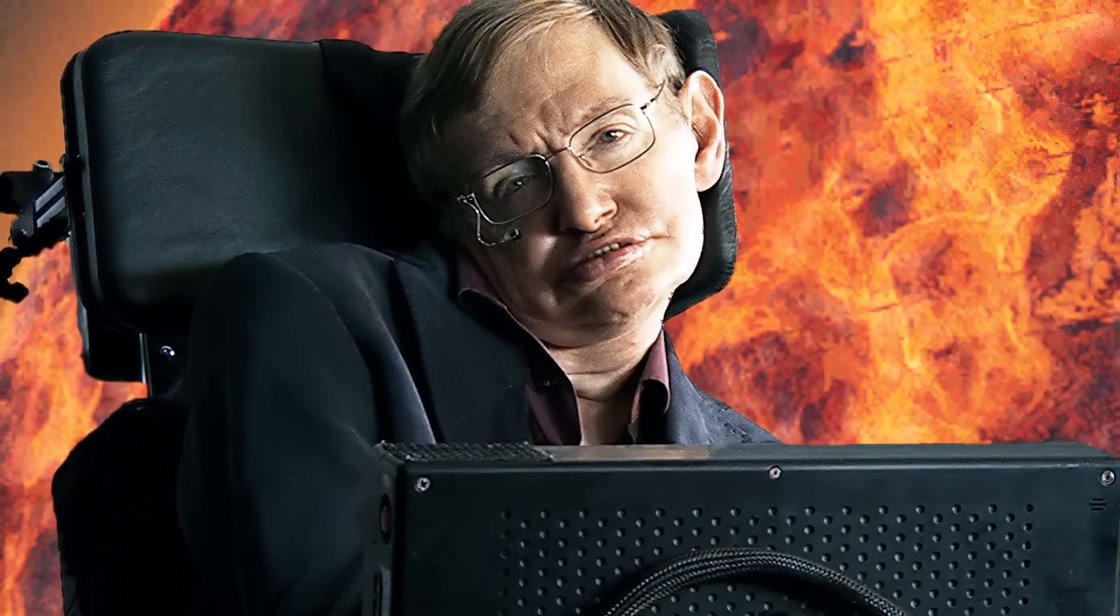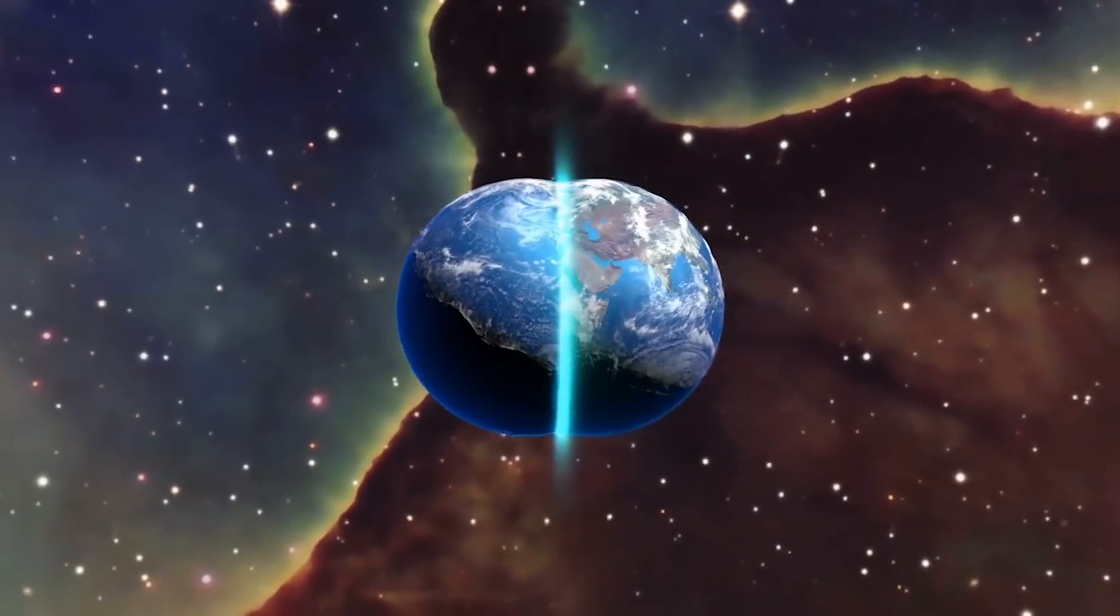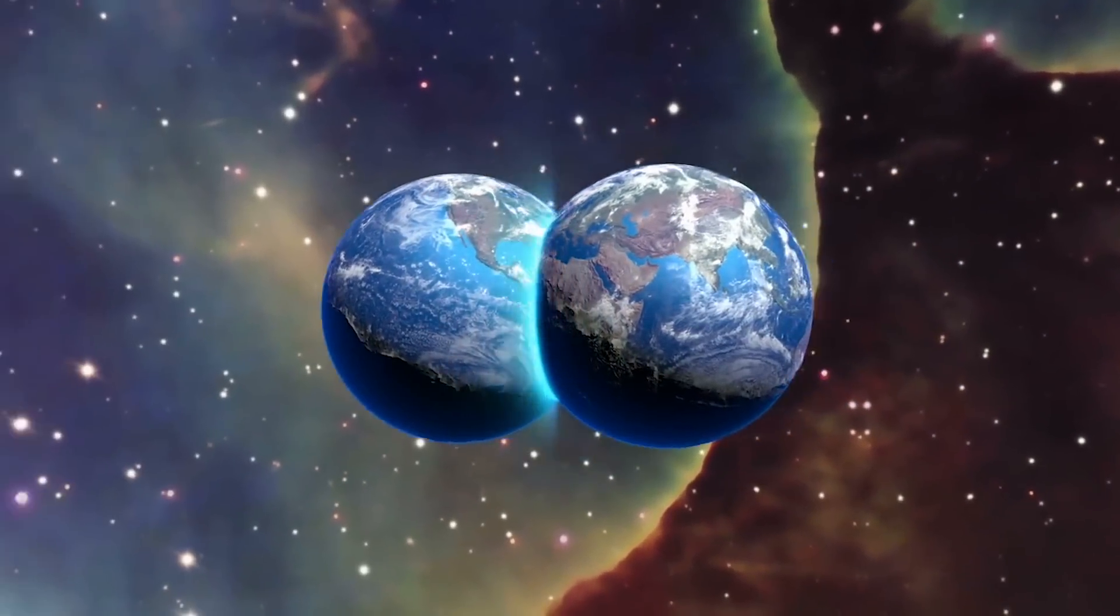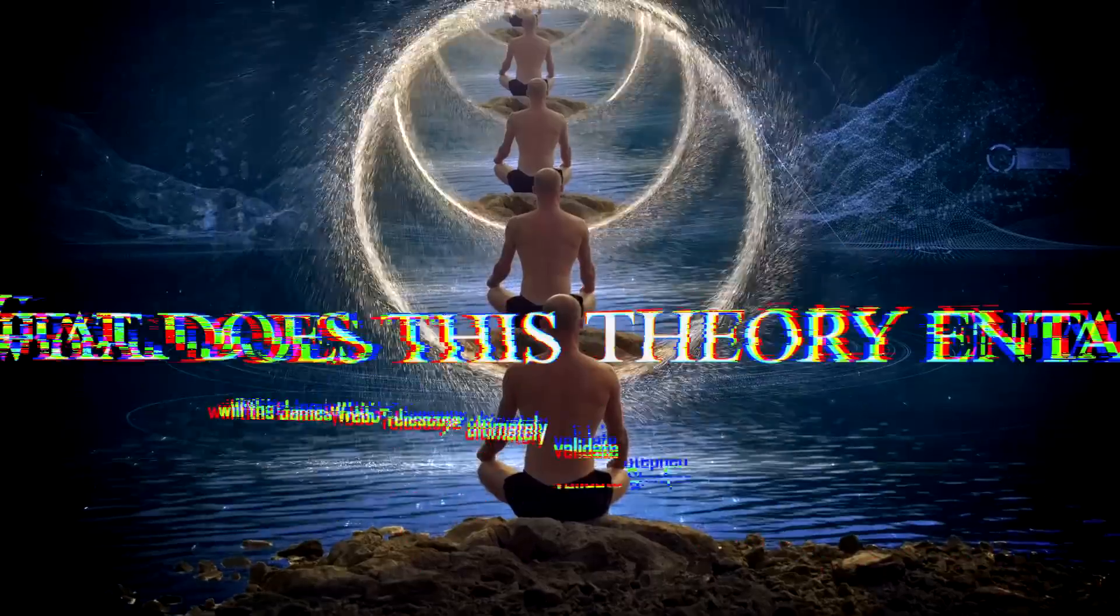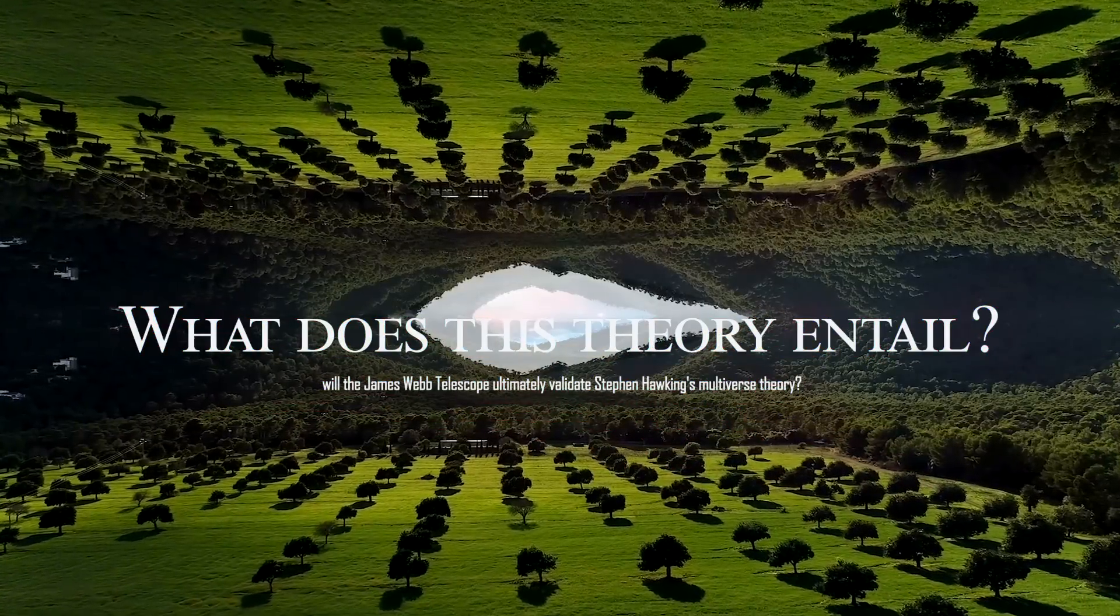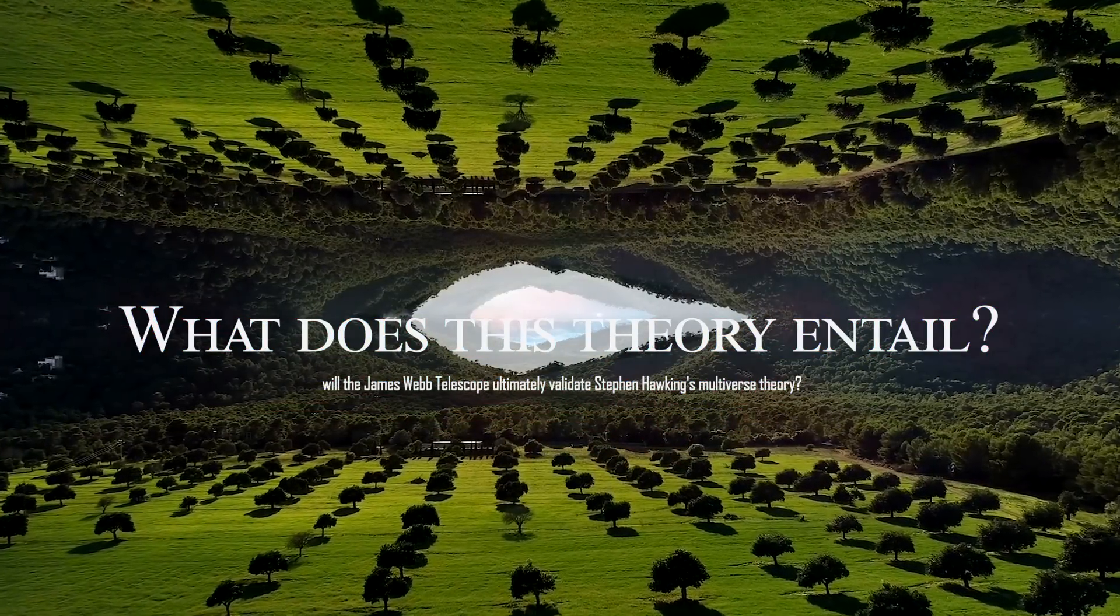The very last theory Hawking worked on before he passed away is one of them. In this piece, he defended the multiverse theory, which contends that a parallel world once had a precise replica of you. What does this theory entail? And will the James Webb Telescope ultimately validate Stephen Hawking's multiverse theory?